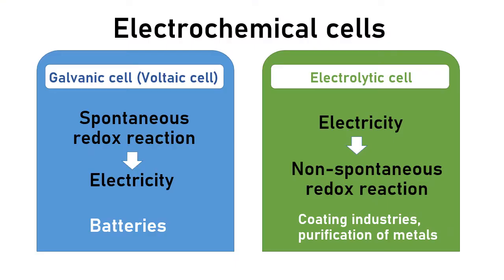We have two types of electrochemical cells: galvanic cells (or voltaic cells) and electrolytic cells. In a galvanic cell, we have a spontaneous reaction that produces electricity. In the opposite case, electrolytic cells require electricity to make a reaction occur. The reaction in a galvanic cell is spontaneous, while the reaction in electrolytic cells is normally non-spontaneous.